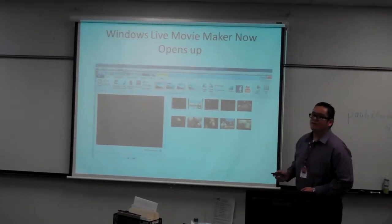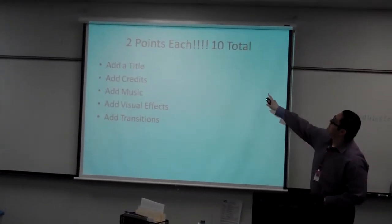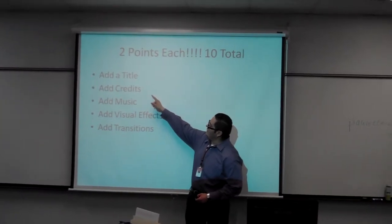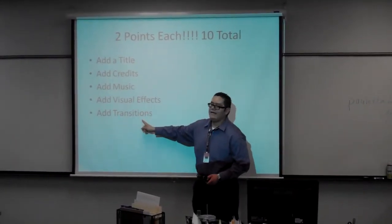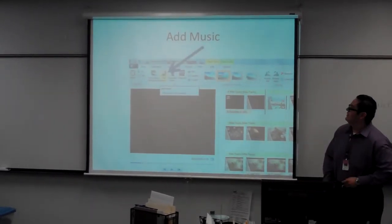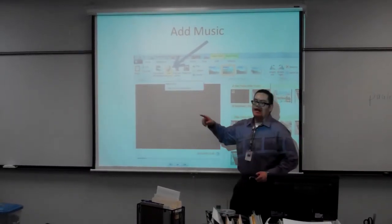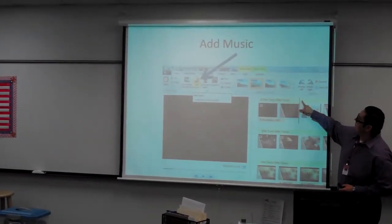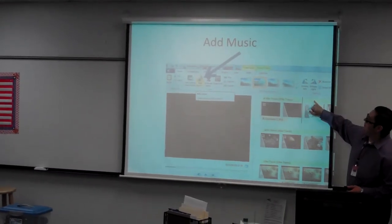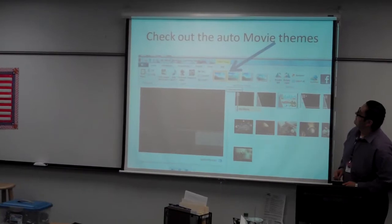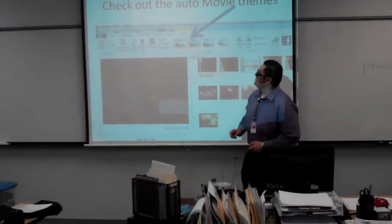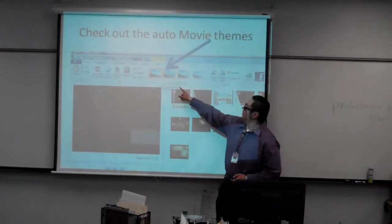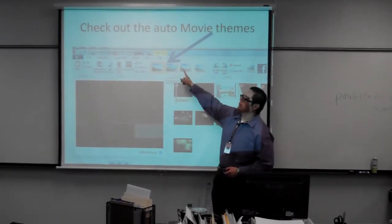Then you'll start creating your photo story. For today's assignment — only ten points, two points for each item — just to get you warmed up learning how to use photo story. You're going to add a title, add credits, add music, add visual effects, and add transitions. To add music, click on add music and locate the music files downloaded from virtual classroom. You can add visual transitions by going to visual effects, add animations by going to animations, and also try auto movie themes by clicking in here — there are some really cool ones.